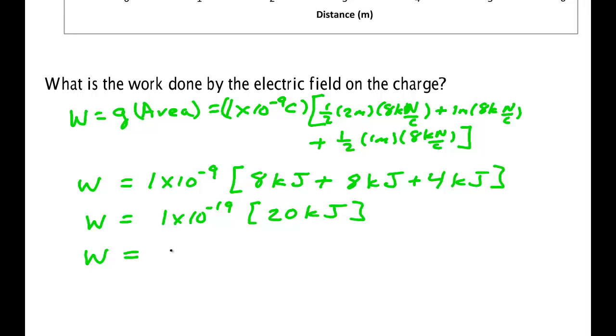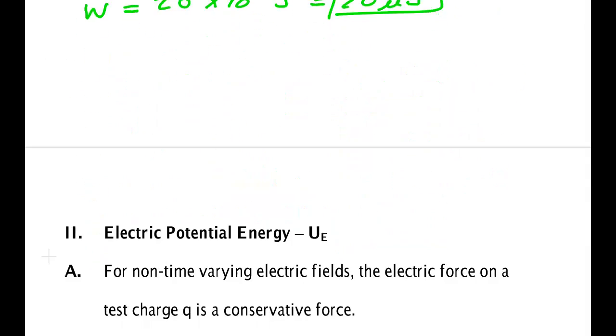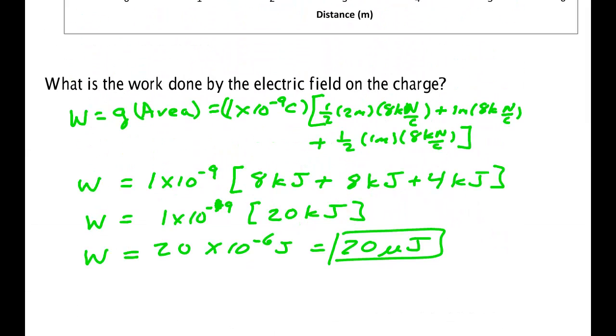So if I've done that right, I should have, that looks like 10 to the minus 6. So this is 10 to the minus 9, 10 minus 3, that would be 20 times 10 to the minus 6 joules, or 20 microjoules. And that finishes that particular problem. Alright, that deals with work in the electric field. I'll see you on another video.